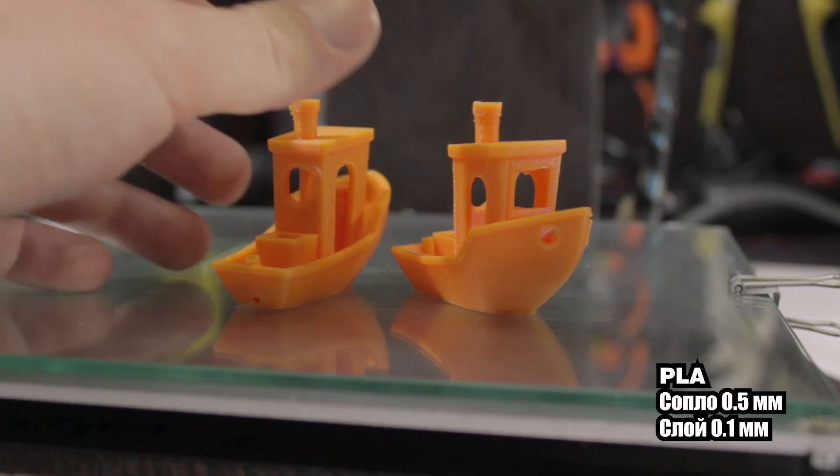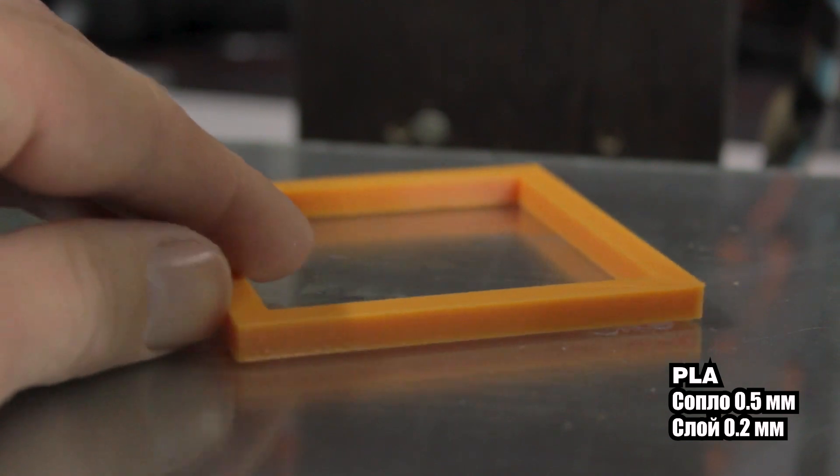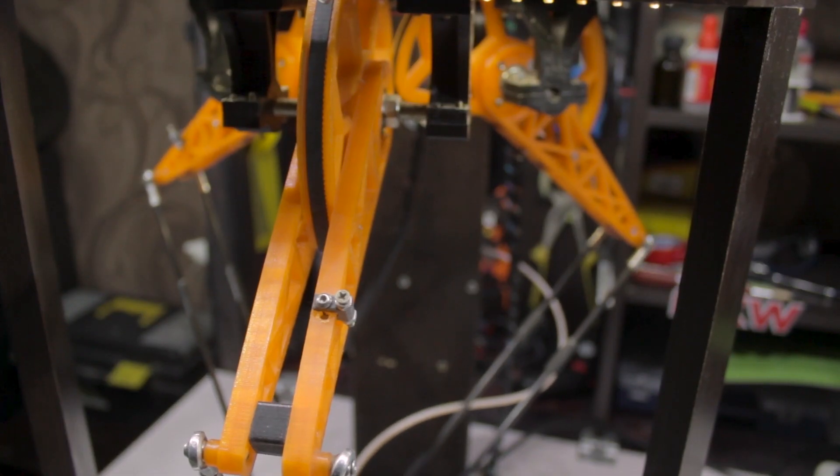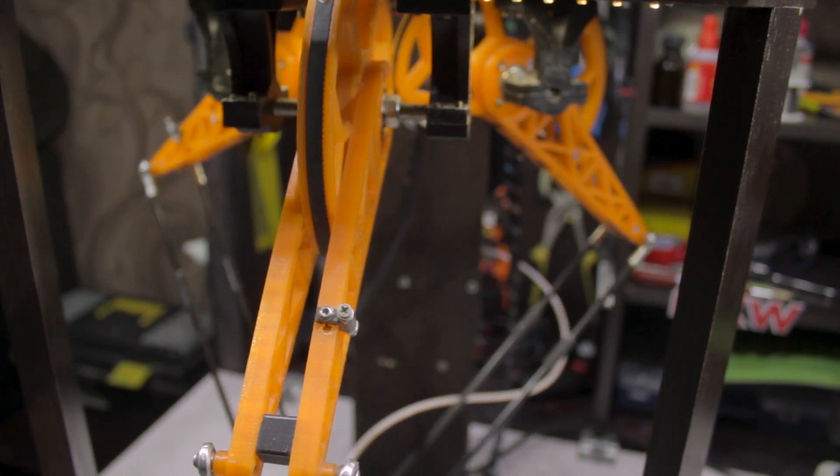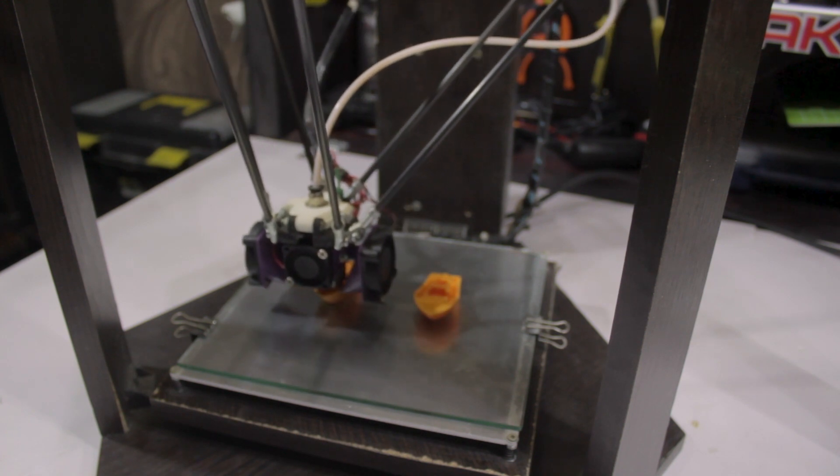This is PLA plastic, a nozzle of 0.5 and a layer of 0.2 mm. I cannot name the exact print speed, because host programs and slicers don't know how to work correctly with such mechanics, because the actual speed is significantly different from the set. They don't know how because, as I said, such printers are not available. This is the smallest of the problems of the Delta robots, so there's no point in paying attention to it yet.